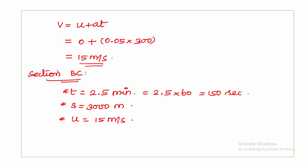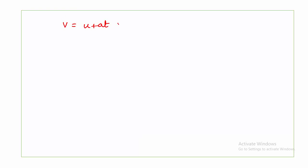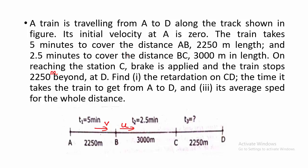The train is traveling with uniform acceleration. The acceleration value already calculated while analyzing section AB is 0.05 m/s². For section BC, using V = U + At: initial velocity U is 15 m/s, plus acceleration 0.05 into time 150 seconds gives V = 22.5 meters per second. This is the velocity of the train when it crosses point C.